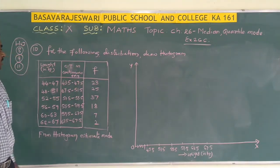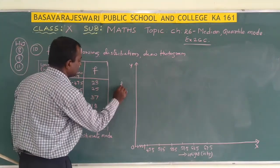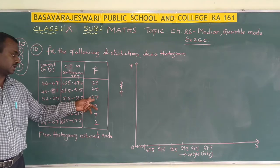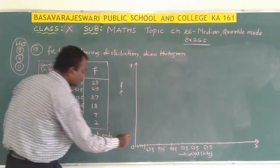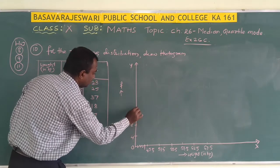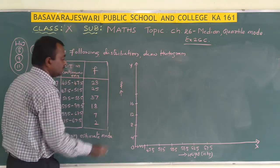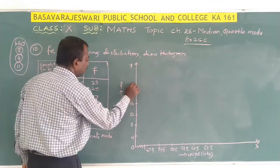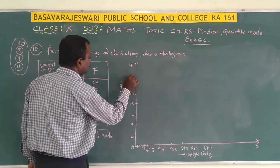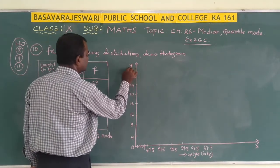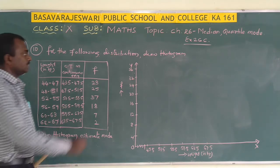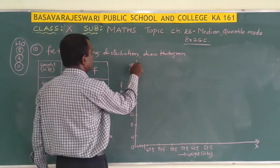Along the y-axis we have to take the frequency. The minimum is 2 and the maximum is 37. So we can take the scale as 4, 8, 12, 16, 20, 28, 32, 34, 36. Since the maximum is 37, we can take one more value — 40 — at the top.